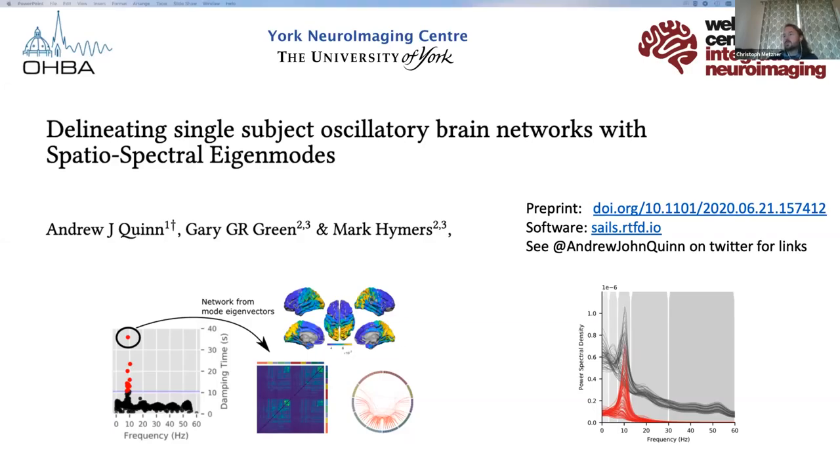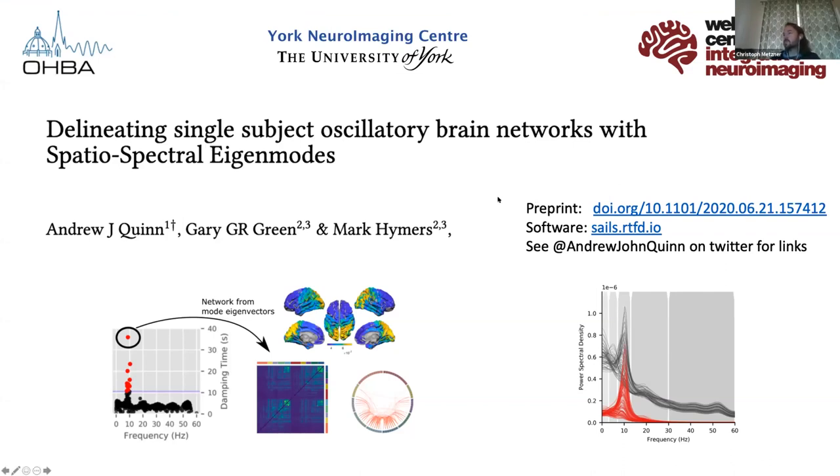We'll move on to a third speaker. It's Andrew Gwynne, also from the University of Oxford. He's a postdoc there in the Oxford Centre for Human Brain Activity, headed by Kia Nobre and Mark Woolrich. Andrew is going to talk about delineating single-subject oscillatory brain networks with the spatial spectral eigenmodes.